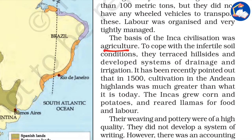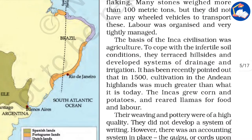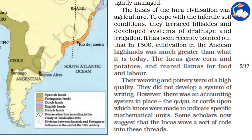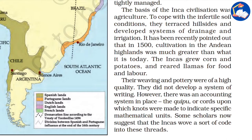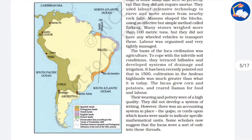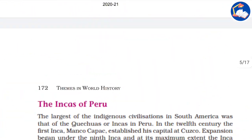To cope with infertile soil conditions, the Incas terraced hillsides and developed systems of drainage and irrigation. Their weaving and pottery were of high quality. They did not develop a system of writing; however, there was an accounting system in place called quipu — codes upon which notes were made to indicate specific mathematical units.